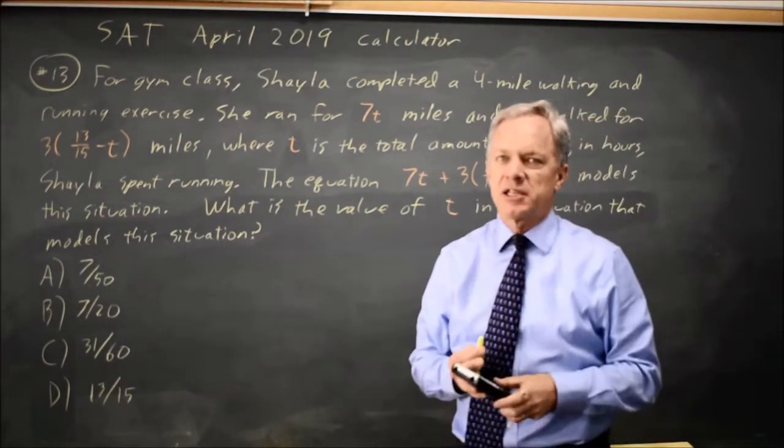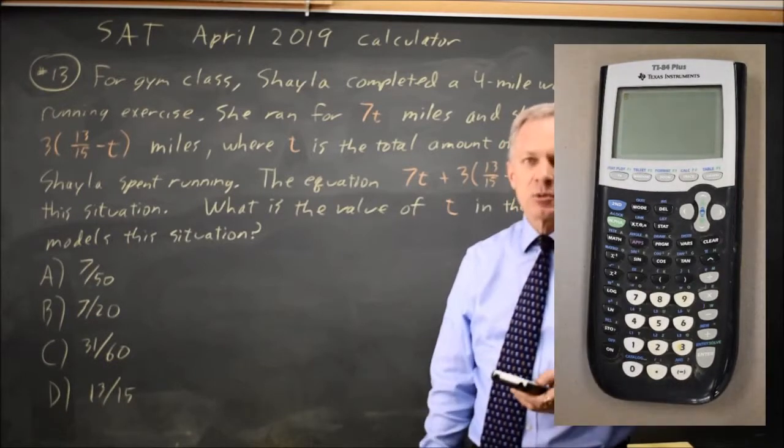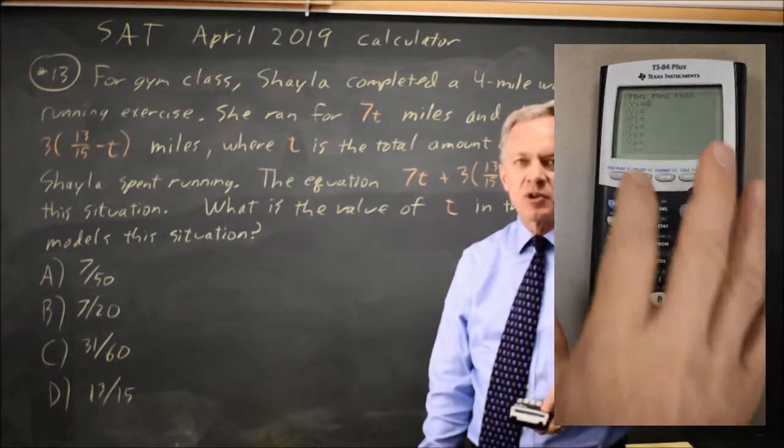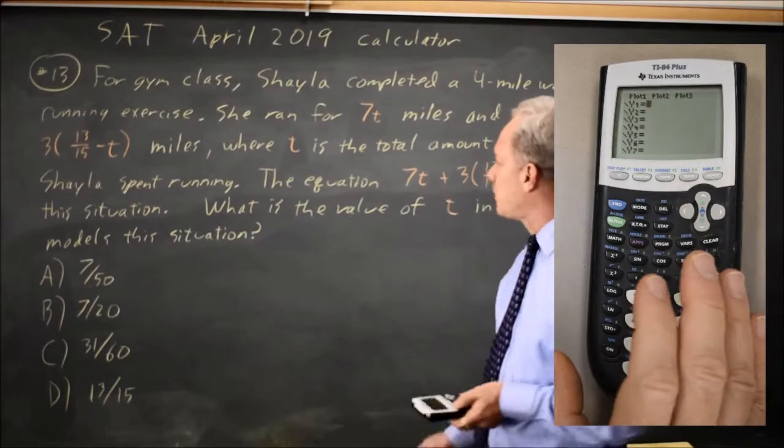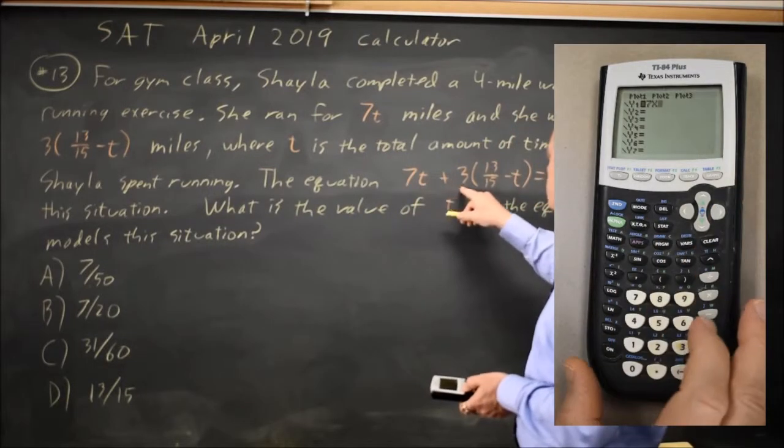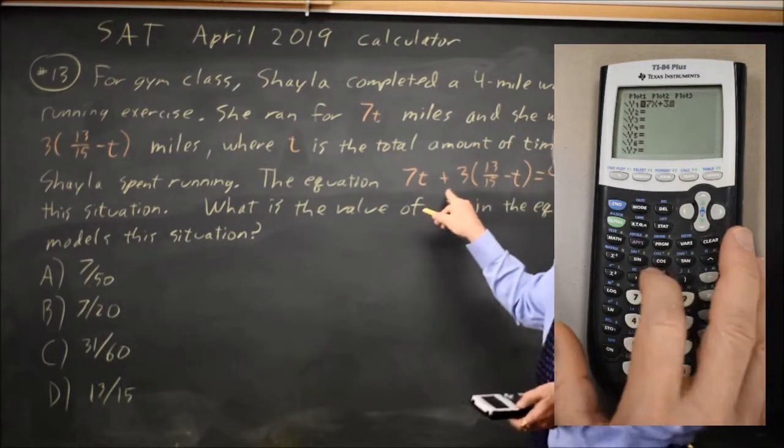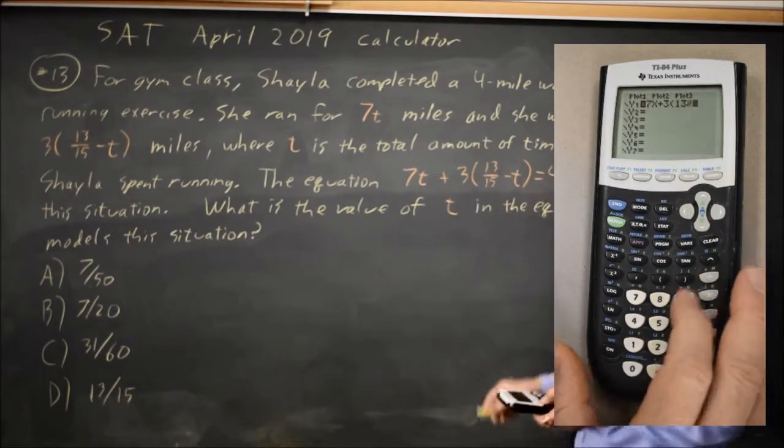And since this is a calculator question, I'm going to do my algebra on the calculator. Any time you have an equation with only one variable, if you put the left side 7t plus 3 times this quantity in y1, and the right side 4 in y2,